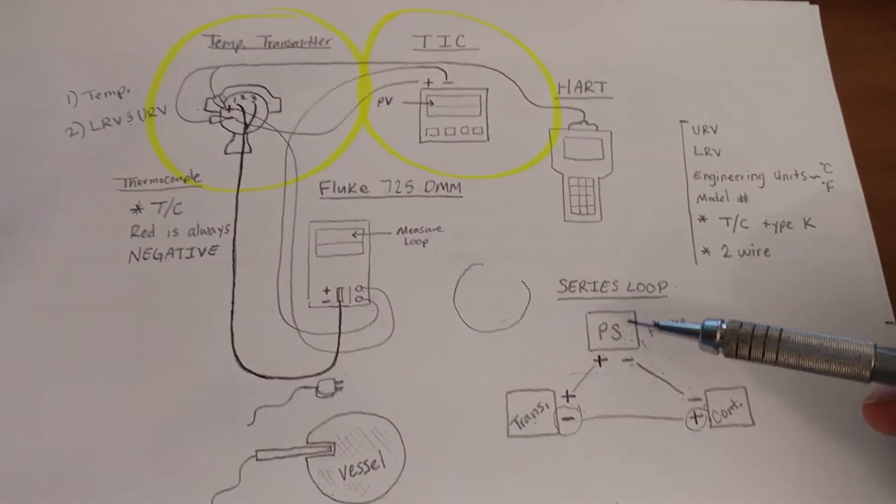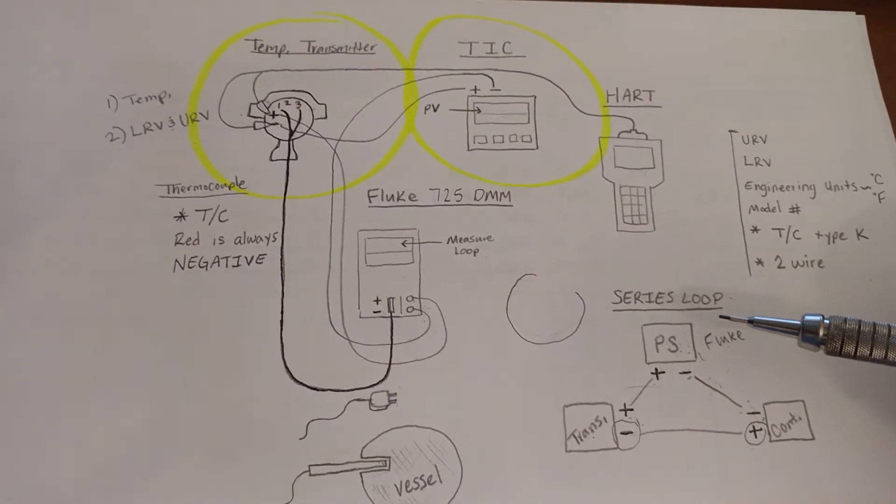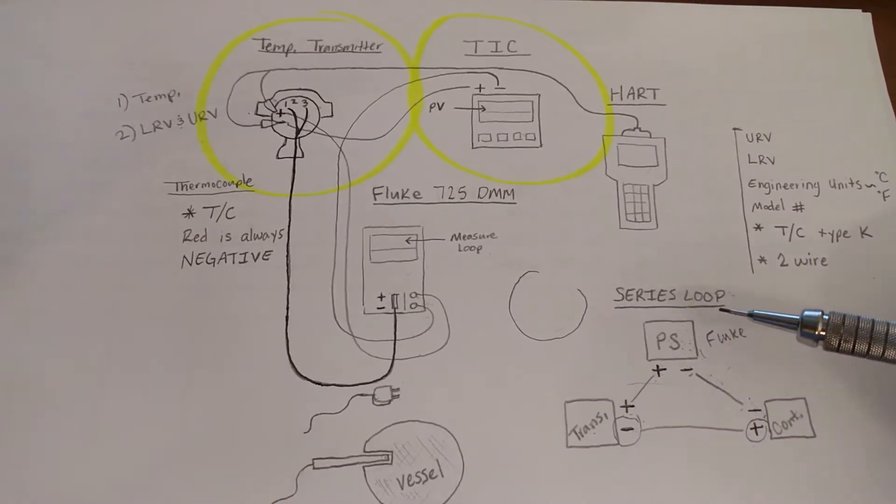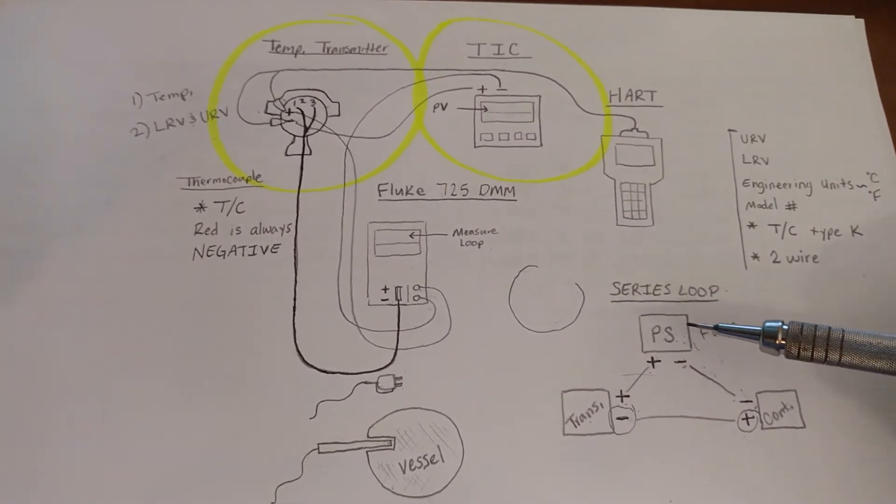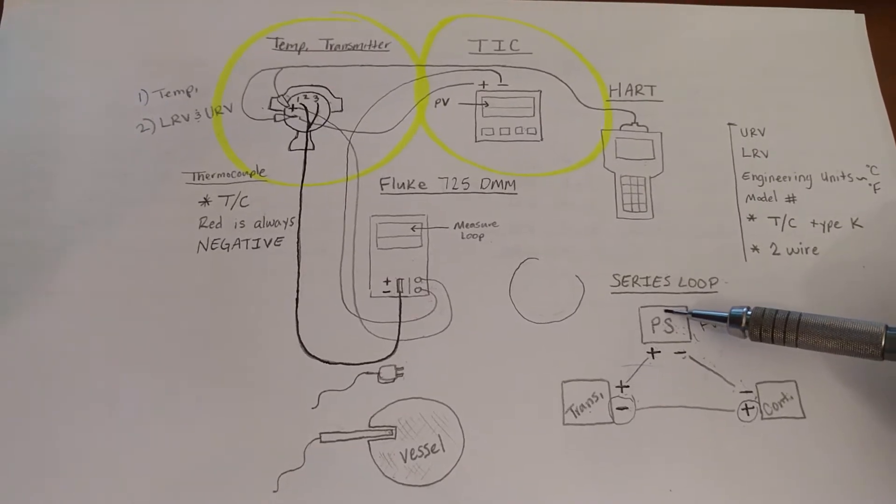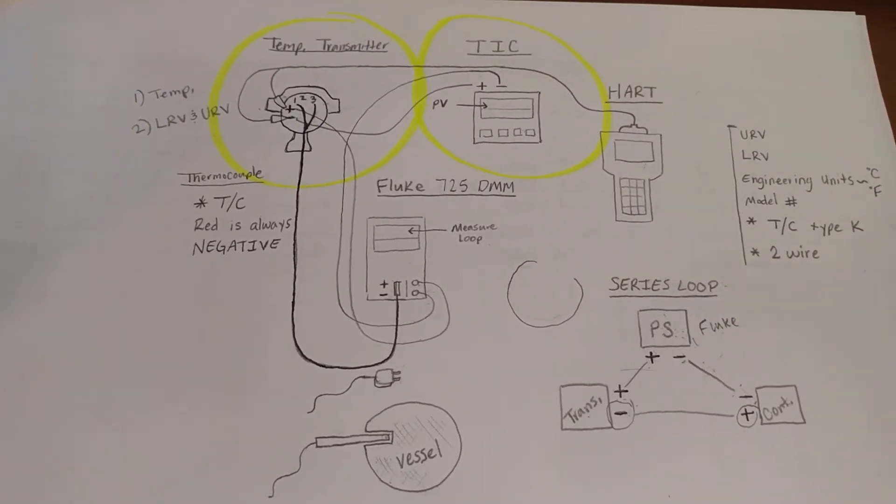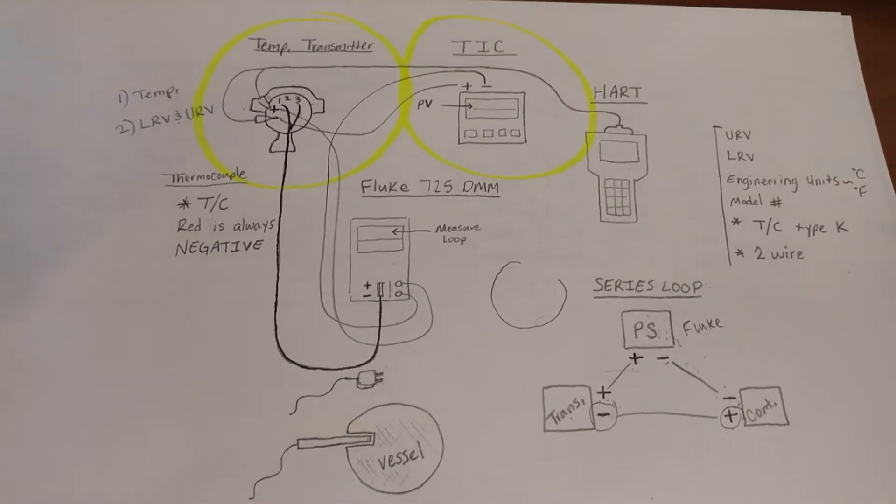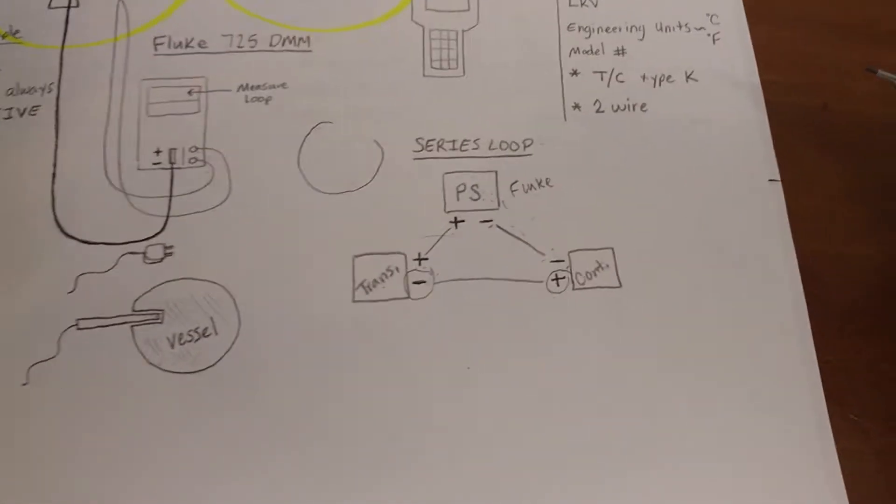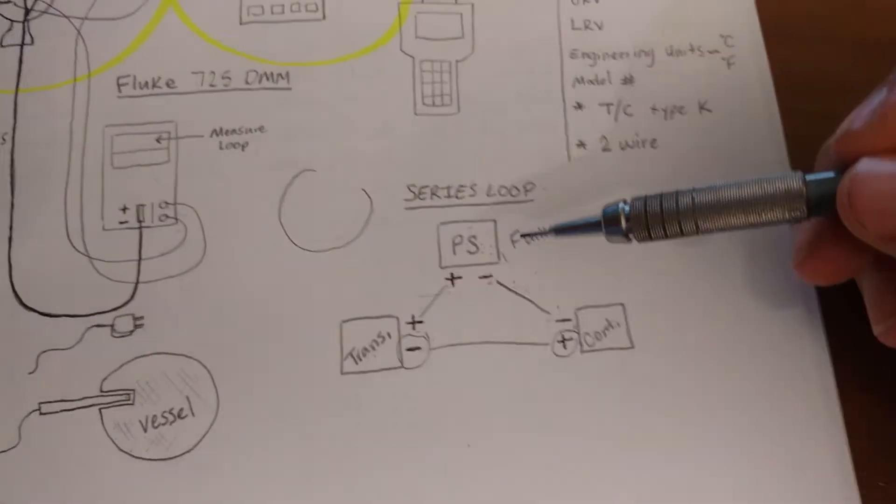One way to make sure that we have our loop established is to use a methodical approach, a systematic way, like a checklist, to make sure everything is where it needs to be. So this right here will explain a checklist.